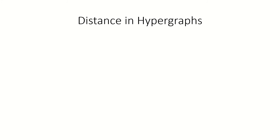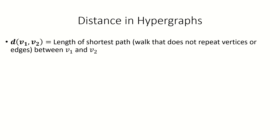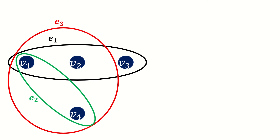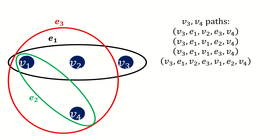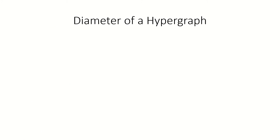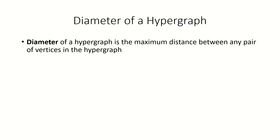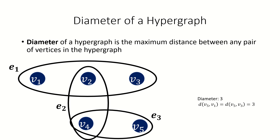Our definition of path in a hypergraph is useful for constructing a notion of distance. We can define the distance between two vertices in a hypergraph to be the length of the shortest path between them, just like in graph theory. If there is no path joining a pair of vertices, we define their distance to be infinity. For example, the distance between vertices v_3 and v_4 in a given hypergraph is 2, the length of the shortest path. Using this definition of distance, we can define the diameter of a hypergraph to be the maximum distance between any pair of vertices. In the hypergraph shown, the diameter is 3, because that's the length of the longest shortest path between any pair of vertices.